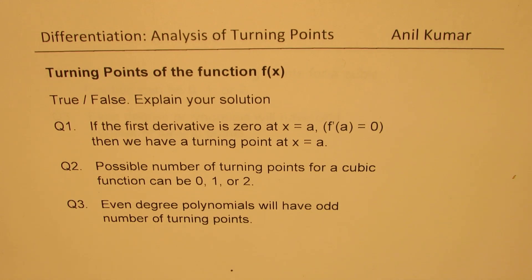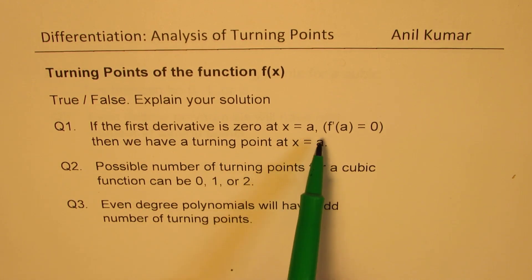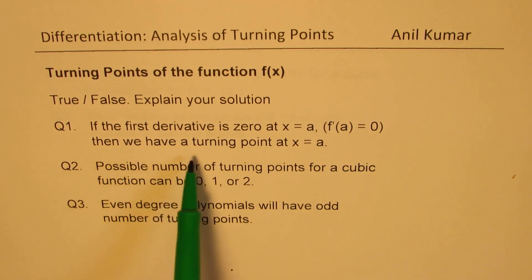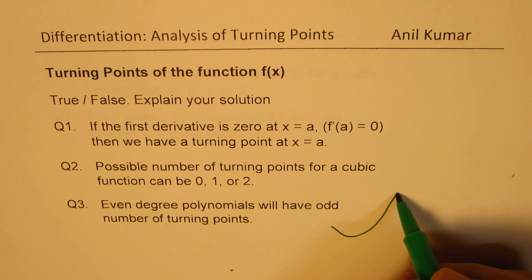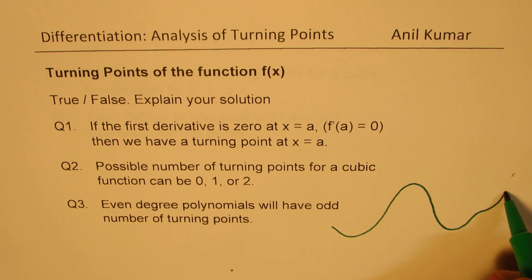The very first question is: if the first derivative is zero at x equals a — that is f'(a) equals zero — we have a horizontal tangent line, then we have a turning point. So let's look into a graph. Let's say we have a graph which is kind of like this — we have a turning point here, and then we also have something like this.